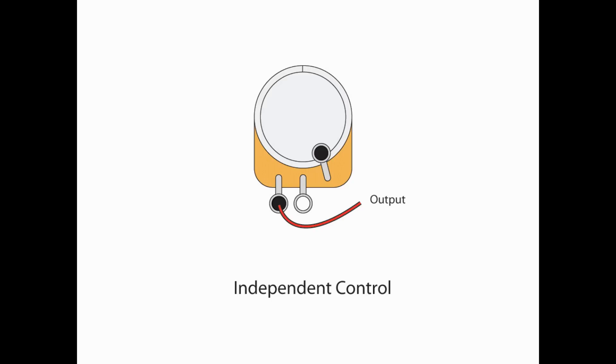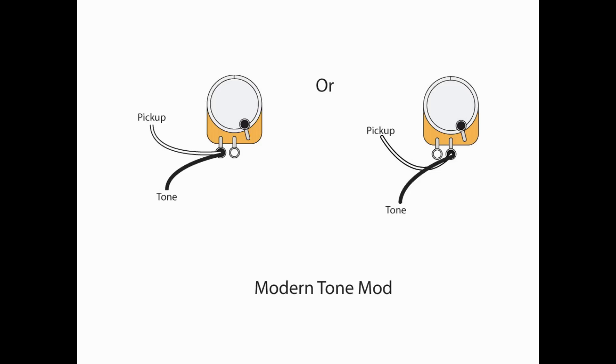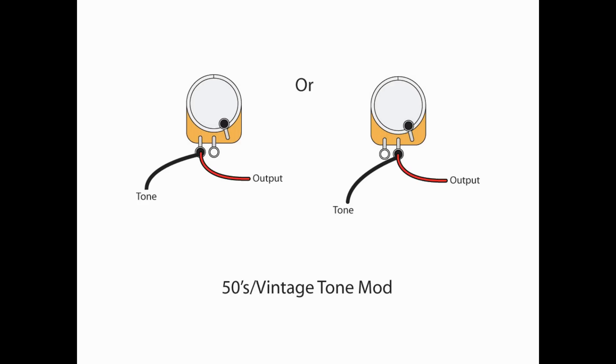Now, to dovetail right onto this, if your tone input is wired to the volume's input, or the same lug that your pickup wiring is coming to, you have a modern tone mod. If the tone input is wired to the volume pot's output, then you have a 50s or vintage tone mod.